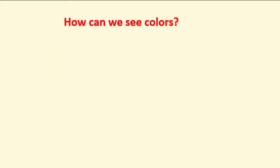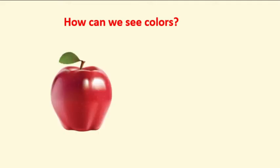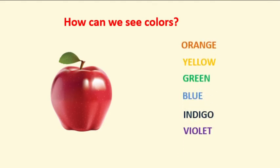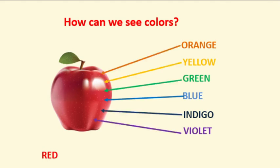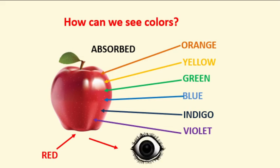How can we see colors? Take this red apple as an example. When light hits the apple, it contains all seven colors. The apple gets its color because it absorbs all the colors except red, which bounces or reflects off its surface. The reflected color is perceived by our eyes — that is why we see the apple as red.